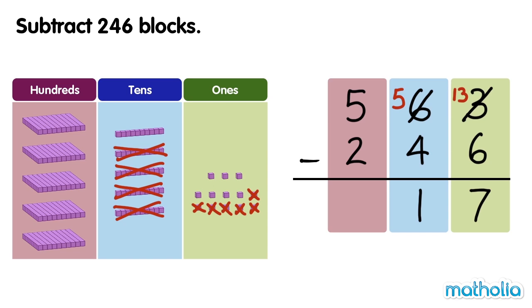Finally, we subtract the hundreds. 5 hundreds minus 2 hundreds equals 3 hundreds. There are 317 blocks left. 563 minus 246 equals 317.